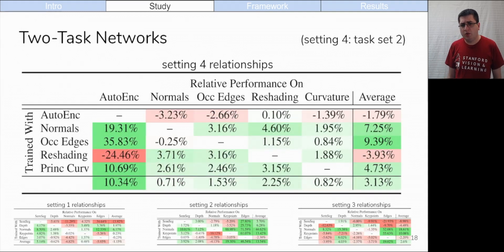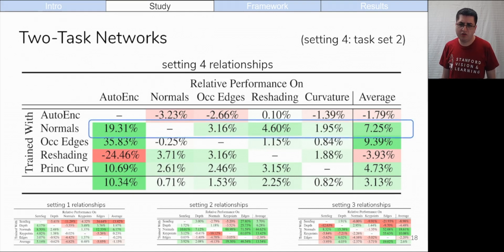In the fourth setting, we have a different task set, though this task set also includes normals. We are using all 4 million instances and our high capacity network. Again, we see that the normals task helps with every task it is trained with.